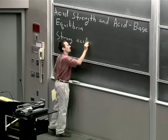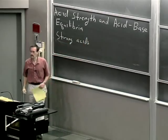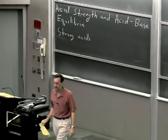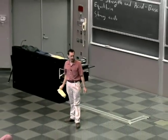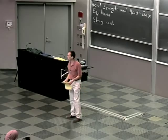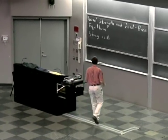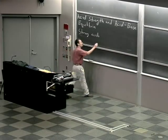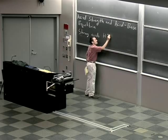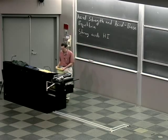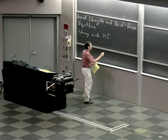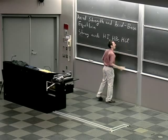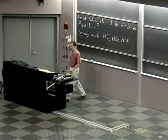Strong acids are compounds that you would typically think of as acids — compounds that when you pour them into water, they fully dissociate to a proton and a counter ion. They are the acids that burn you. Hydrogen iodide and the hydrogen halides are one such category: HBr, hydrogen bromide, hydrogen chloride — these are all strong acids.